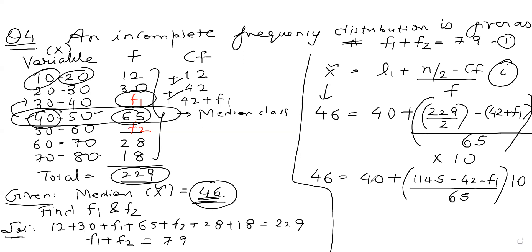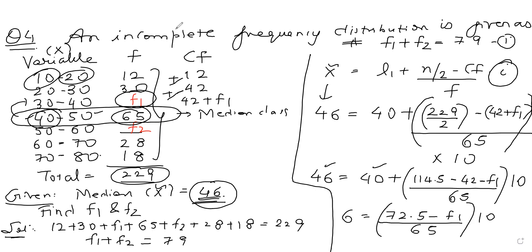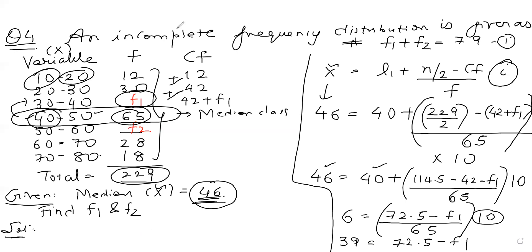Solving the algebra: 46 − 40 = 6, and 6 × 65 / 10 = 39. So 39 = 114.5 − 42 − F1 = 72.5 − F1. Therefore F1 = 72.5 − 39 = 33.5.